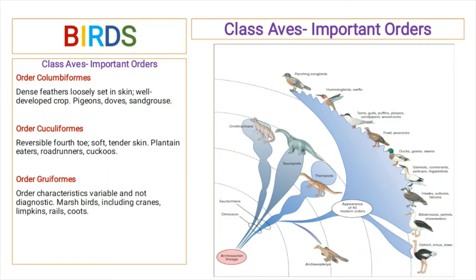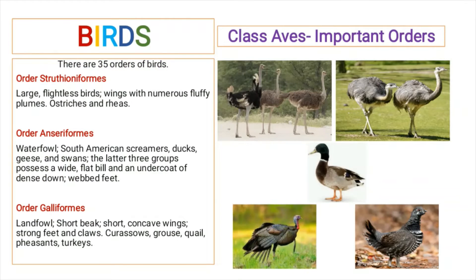Cuculiformes are plantain eaters and include road runners and cuckoos. Order Gruiformes includes birds that have variable characteristics, and these characteristics are not diagnostic. It includes marsh birds that are mainly cranes, limpkins, rails, and coots.